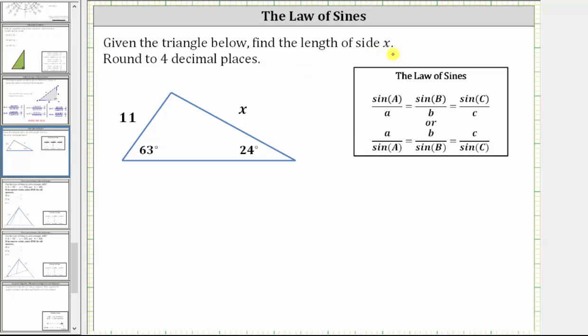Given the triangle below, we'll find the length of side x rounded to four decimal places. Notice how we are given a non-right triangle with two known interior angles. We also know the length of one of the sides opposite a known angle, and our goal is to find the length of this side, which is also opposite a known angle.